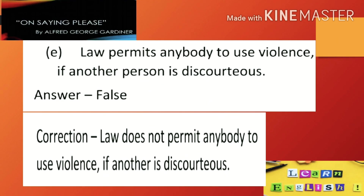Our next sentence is: Law permits anybody to use violence if another person is discourteous. Agar koi doosra person discourteous hai, toh law permit karta hai kisi ko bhi violence use karne ka. Answer is false — law ne aisi koi bhi permission di nahi hai. So the correct sentence is: Law does not permit anybody to use violence if another is discourteous.